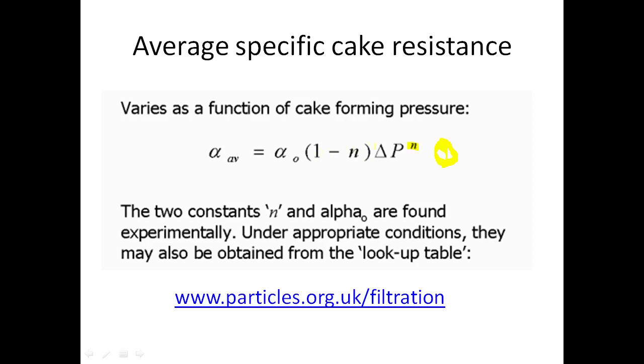However, n in the simulation is left open as a possibility to have a value, a finite value, because compression could be taking place. If n is zero, then alpha average is just simply equal to alpha nought. That is our incompressible assumption. The specific resistance doesn't change, even though the pressure drop could be changing over the filter cake. We still have a constant specific resistance. So that's the incompressible assumption, which of course is the simplest case.